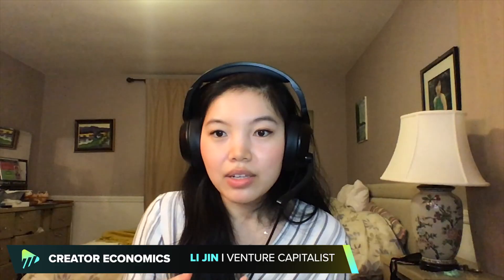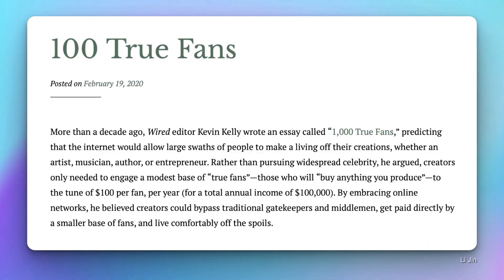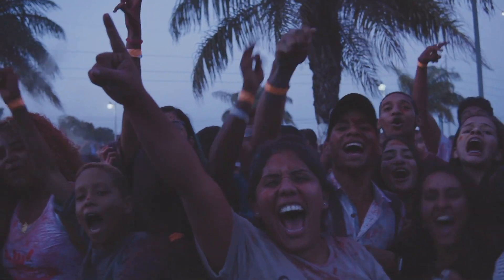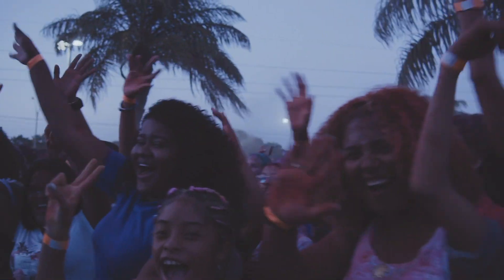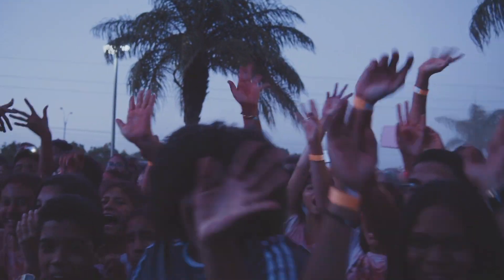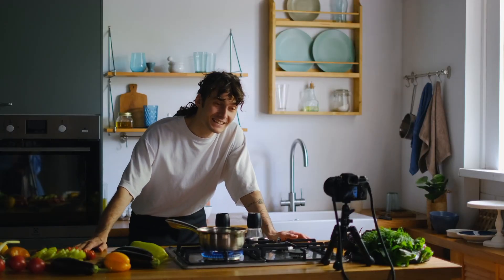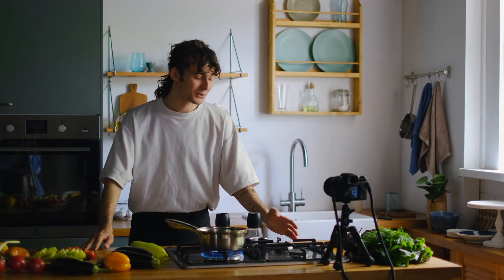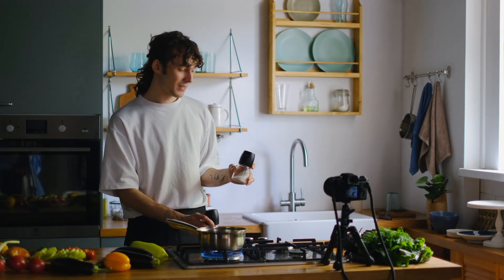Li Jin, the co-founder of Variant Fund and a thought leader in the creator economy, believes creators only need 100 true fans to make a comfortable living. And if you are able to get 100 people to invest in your social token, chances are they will be a diehard fan that will support a creator's journey, considering now they have a financial incentive to do so. And social tokens are such a unique asset that they naturally draw attention — as a creator, you are constantly trying to draw attention to your work, and utilizing social tokens is a great way to do so.